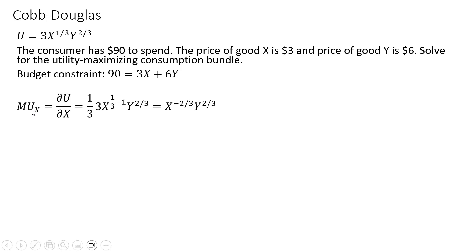The next step is to get the marginal utility of good X. We're going to take the partial derivative of the utility function with respect to X. The 1/3 exponent on the X term comes down in front, and we subtract 1 from that exponent — 1/3 minus 1. We don't do anything with the Y term. This simplifies to: 1/3 times 3 is just 1, and 1/3 minus 1 leaves us with X raised to the minus 2/3 power. The Y term just hangs around.